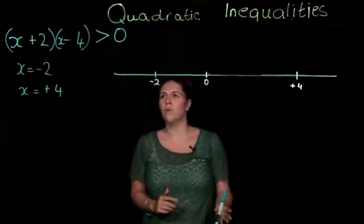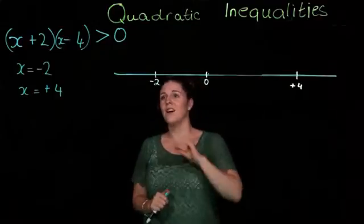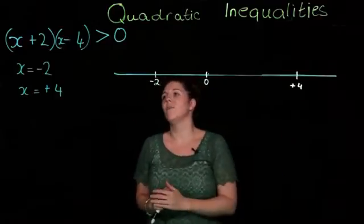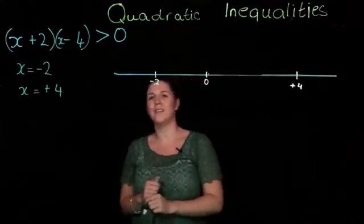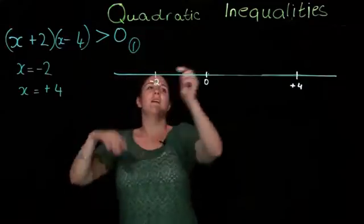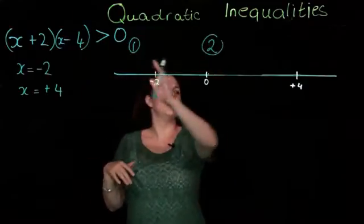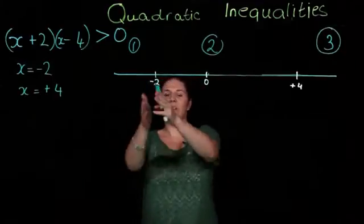One of the ways we're going to test this is on a number line, testing different numbers in different regions. This is our first region, this is our second region between minus 2 and 4, and this is our third. The minus 2 and 4 come from the factorization and solution.